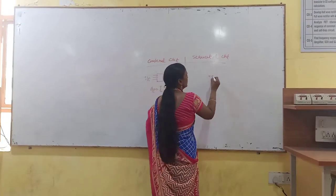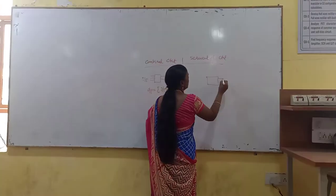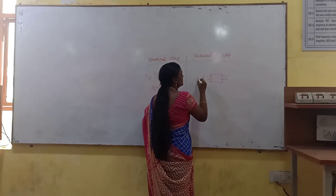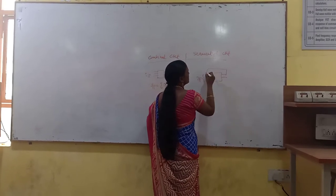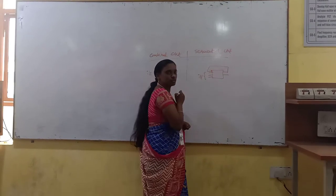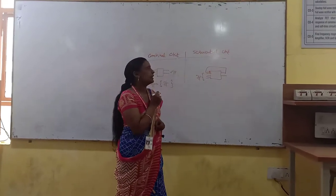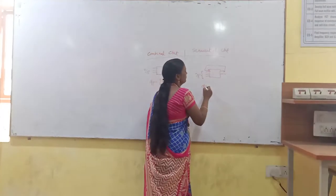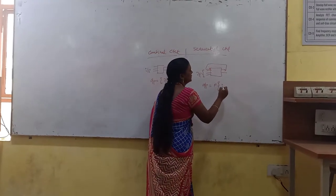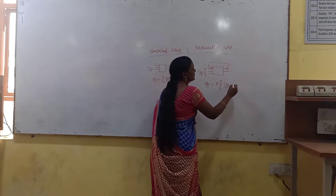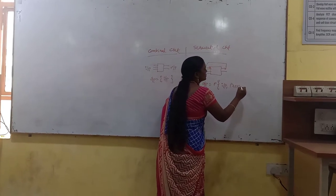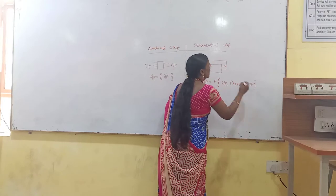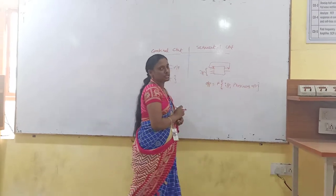But in a sequential circuit, the output depends on the present inputs as well as the previous outputs. So the output is a function of present inputs as well as the previous outputs. This is a sequential circuit.